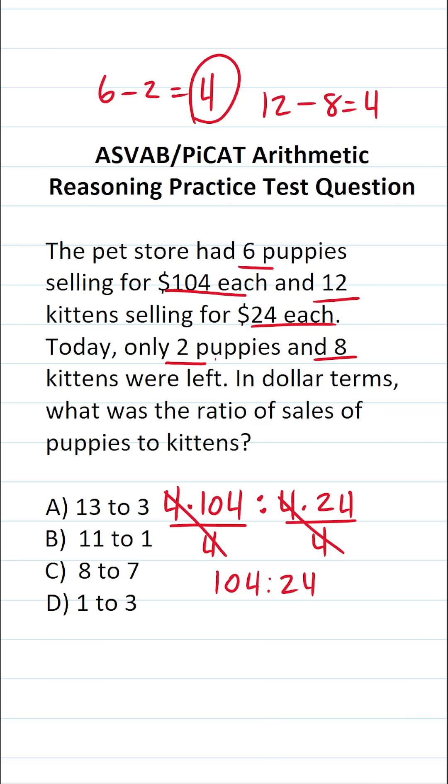Now, simplifying a ratio is just like simplifying a fraction. We want to find a number that goes into both 104 and 24. And again, if you can't see it, just do the easiest one first. In this case, I'm going to reduce these both by 2. 24 divided by 2 is 12.